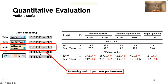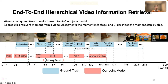In some videos, people are sometimes explaining something for a long time without much change of visual content. In our ablation study, we found that removing audio input hurts performance for all three tasks, showing that audio is very helpful in understanding video contents and detecting boundaries. Here we show an example of hierarchical video information retrieval with our model: given the text query 'how to make butter biscuits,' our joint model predicts a relevant moment from a video, segments the moment into steps, and describes the moment step-by-step.